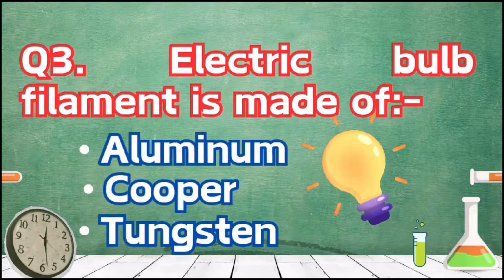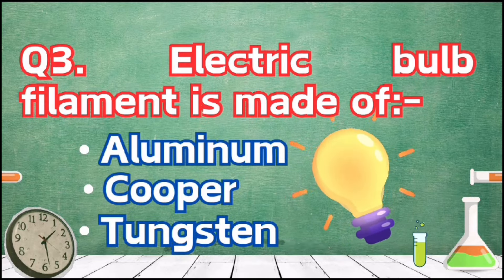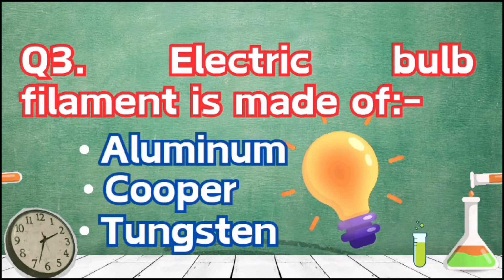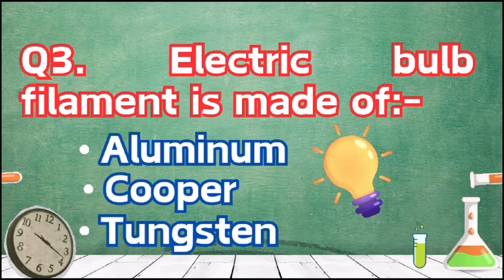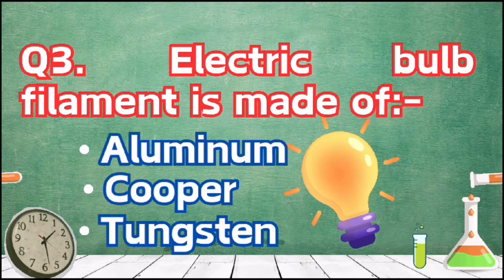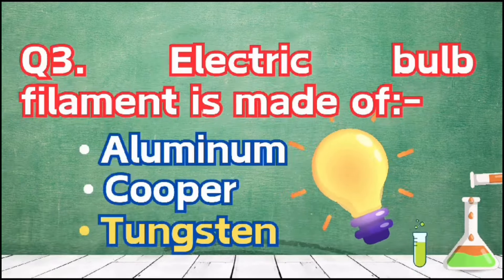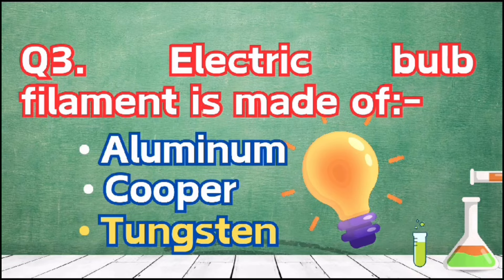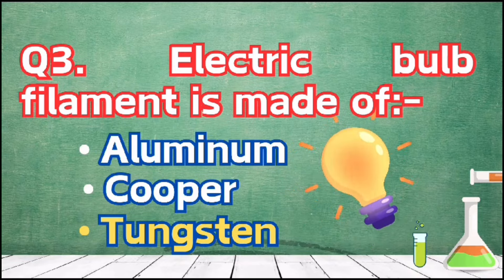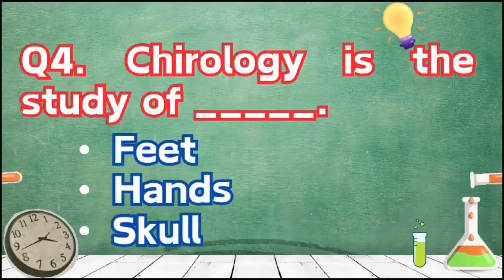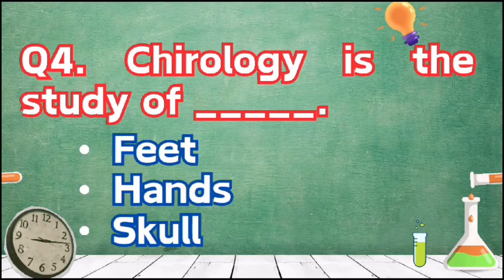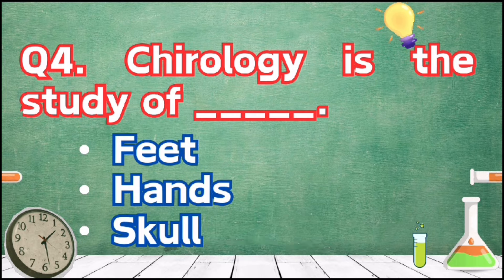Electric bulb filament is made of — the right answer is option C, tungsten. Next question: chirology is the study of — options are A) feet, B) hands, or C) skull.